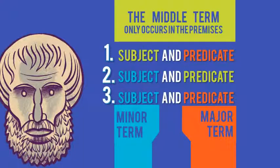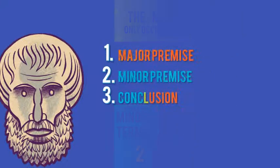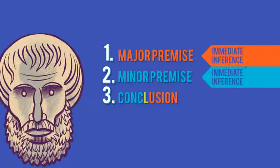So the middle term never shows up in the conclusion. You should also notice that each term gets used exactly twice. So the minor term shows up in the second sentence and in the conclusion. The major term shows up in the first sentence and in the conclusion. And the middle term only shows up in the first two sentences. So we call the first sentence the major premise because it has the major term in it. The second sentence is called the minor premise because it has the minor term in it. And the last sentence is the conclusion. You'll also remember from the first episode that these first two sentences are immediate inferences, whereas the conclusion is a mediate inference.